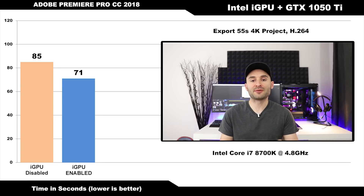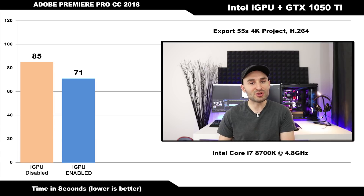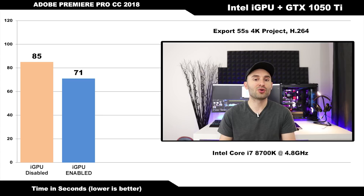So how much time is all of this going to save us? Exporting a short 4K project just under a minute in length in H.264 codec took about 85 seconds without the iGPU, and with the iGPU enabled, that time dropped to about 71 seconds — a total reduction in time of just over 15%. That's how you gain some additional performance in Adobe Premiere Pro CC with your existing 6th generation or newer Intel CPUs.